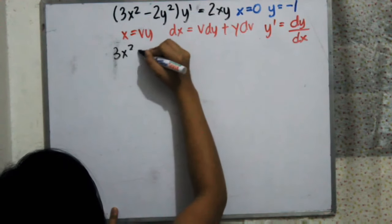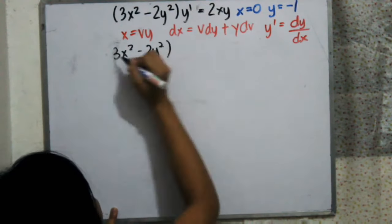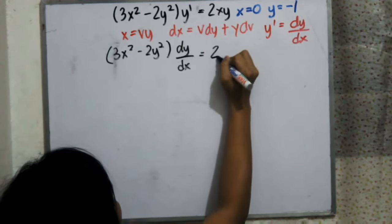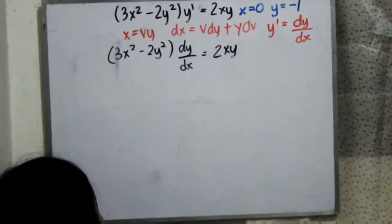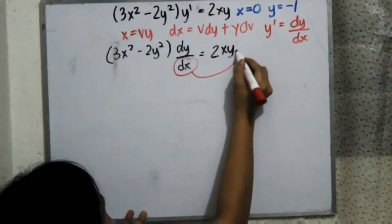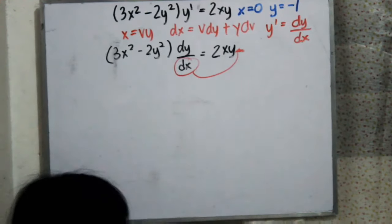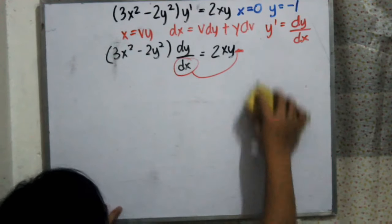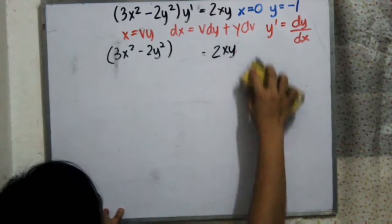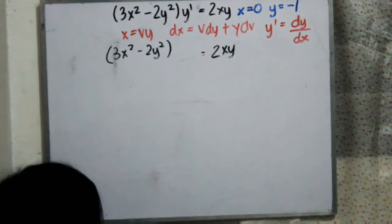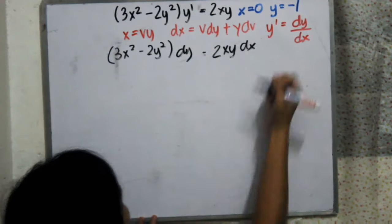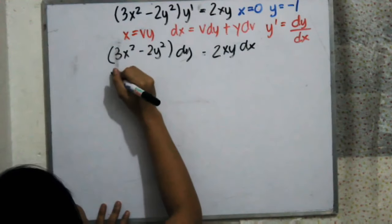We know that y prime is equal to dy over dx. What we have to do is substitute y prime so we can easily solve the problem. We cross multiply and move dx to the other side, giving us 3x squared minus 2y squared dy equals 2xy dx.